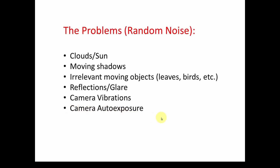Some of the things that may affect your background subtractor results, showing motion in subsequent frames, include irrelevant or random noise. For example, clouds or sun — a cloud comes over and all the pixels get darker, or sun comes out and pixels get brighter. There are also moving shadows caused by sun and clouds, and irrelevant moving objects like leaves and birds. These are technically moving objects, but you really don't care about them.